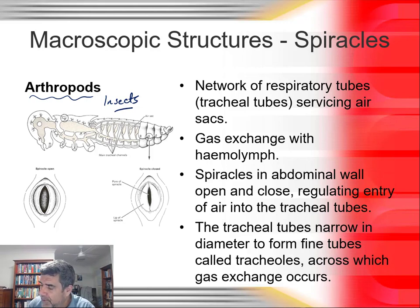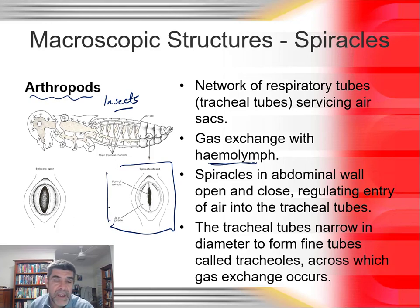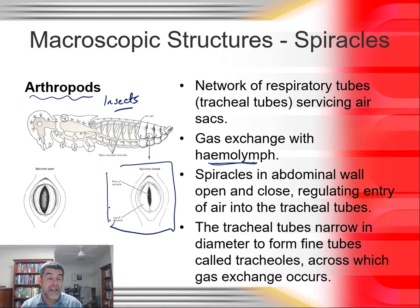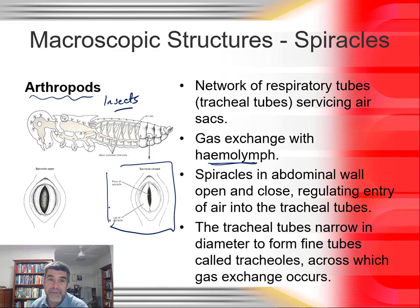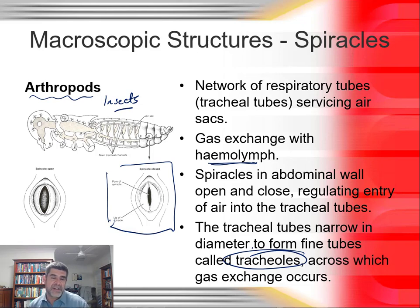Gas is exchanged with haemolymph — basically a fluid, the blood equivalent, that circulates around an insect. Spiracles in the abdominal wall open and close to regulate the entry of air into the tracheal tubes, similarly to how guard cells protect stomata and allow passage of gases in and out. The tracheal tubes are narrow in diameter and form very fine tubes called tracheoles, across which gas exchange occurs — separate little segments scattered throughout the organism.